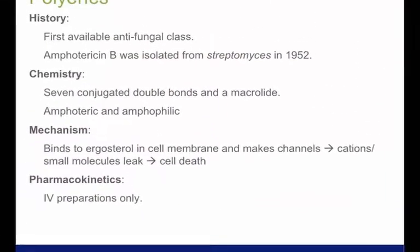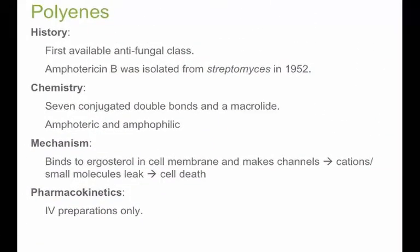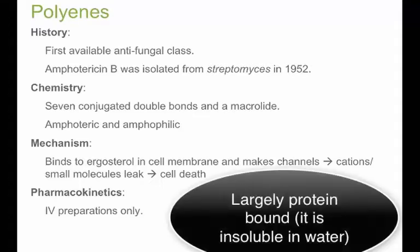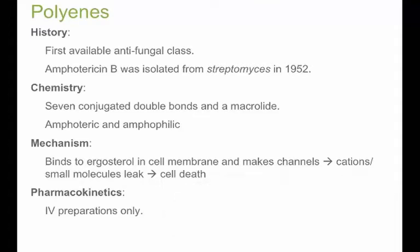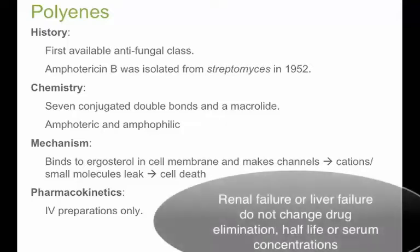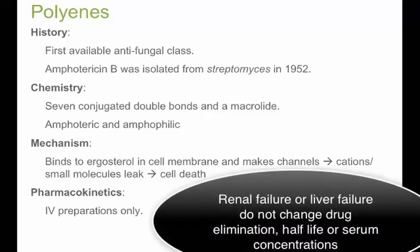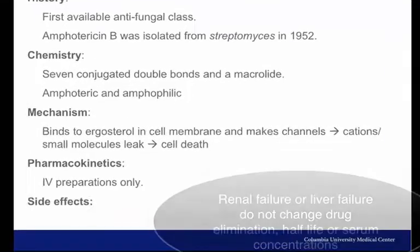Amphotericin is not absorbable from the GI tract. It remains largely protein-bound in plasma. Because it is not eliminated renally nor hepatically, azotemia or liver failure do not alter plasma concentrations or dosing.